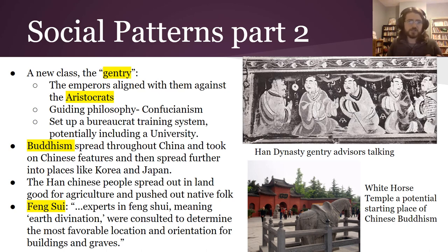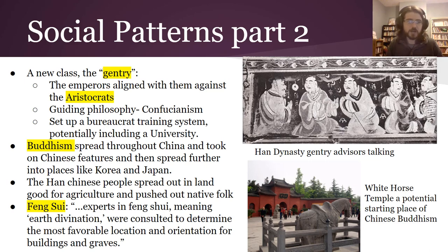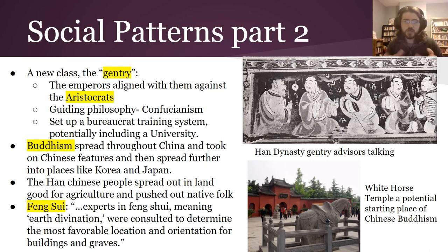This changed their society in many ways. The emperors aligned themselves with the gentry — a new class of people who owned land but also sent their sons through the school system to become advisors and bureaucrats. The emperors used that to undermine the power of the large land-owning aristocrats the Zhou had relied on. They used Confucianism as a guiding philosophy and set up an elaborate training system. Buddhism also spread throughout China during this time, took on unique Chinese features, and spread to Korea and Japan, becoming dominant there — not original Indian Buddhism, but a more Chinese version. The Han Chinese ethnic group also spread out to control land good for agriculture, pushing other ethnic groups up into the hills.